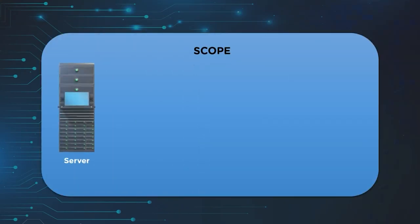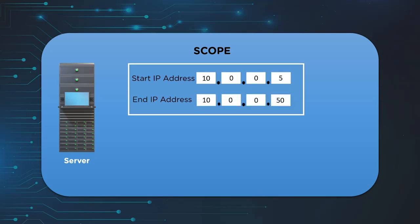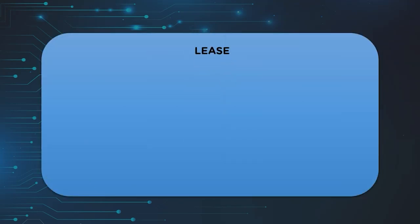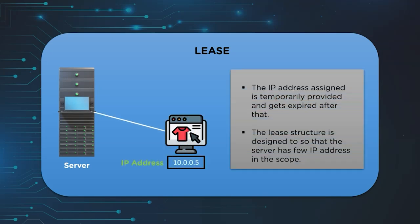Now let's take a look at some notable DHCP settings. The first one is scope — as the name suggests, scope refers to a range of addresses that are available to a DHCP server for allocation to the client device. Next we have lease. This setting is designed to prevent the hoarding of IP addresses by a single device by assigning an expiration date to the leased IP address, so that the DHCP server has a minimum number of addresses left for client devices.